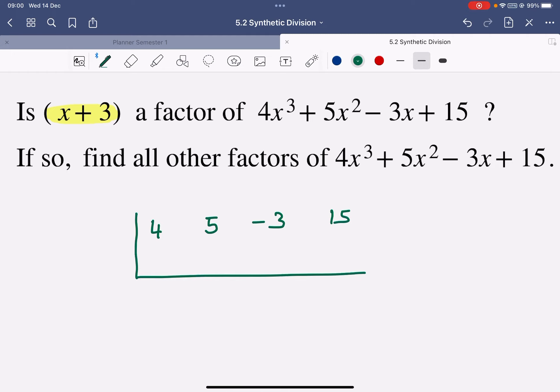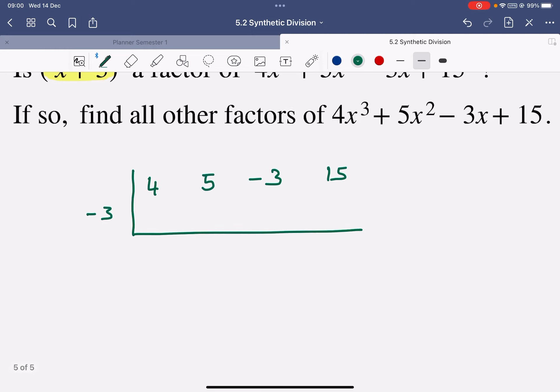So all I'm doing is copying down my coefficients. I'm going to take negative 3 because I want that bracket to be equal to 0 and I do my synthetic division.